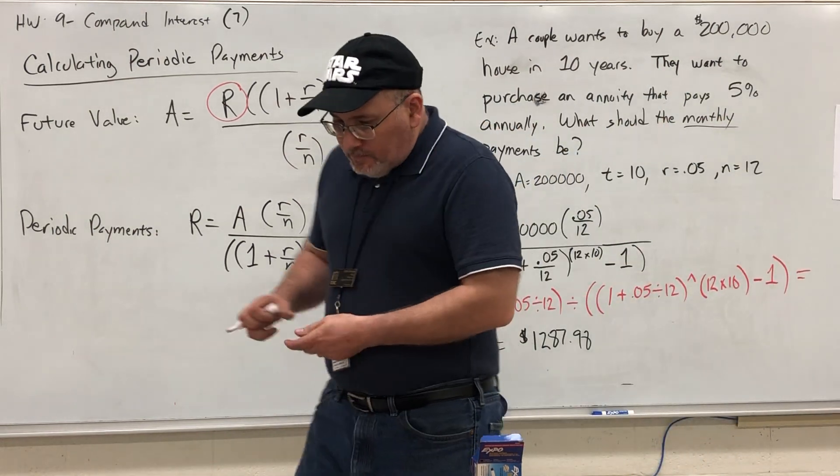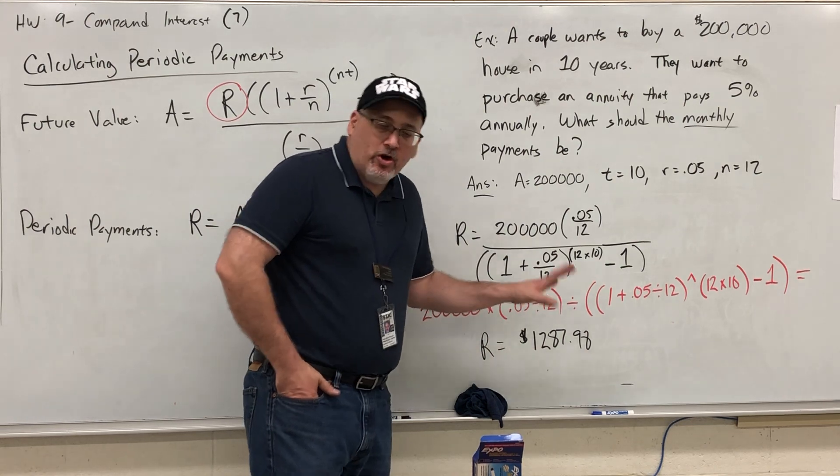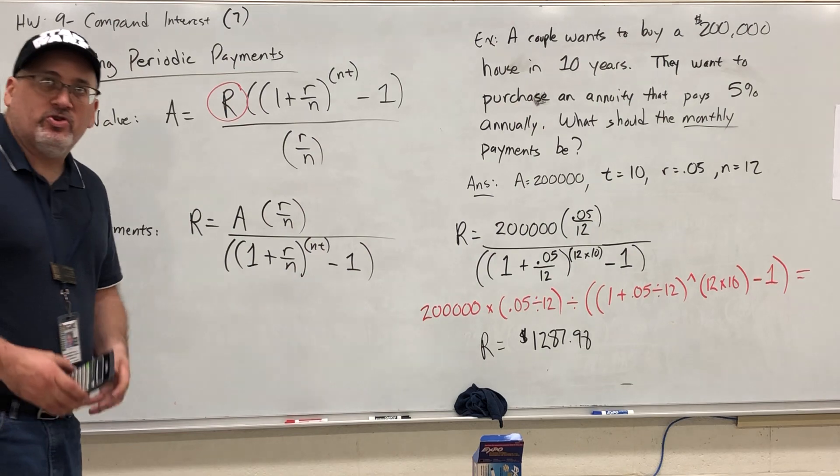Why? Because by saving for it in advance, what you're doing is earning interest on your money. If you take out a loan and pay for it, you're paying interest on $200,000.